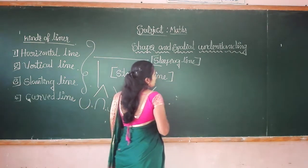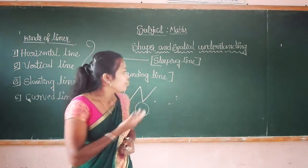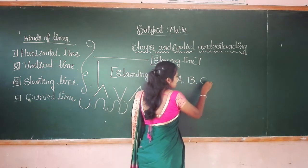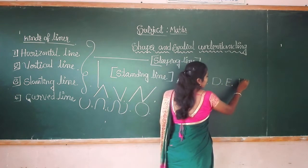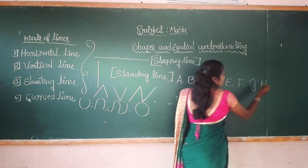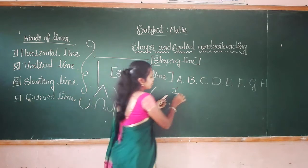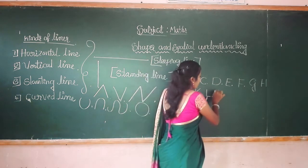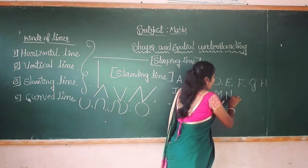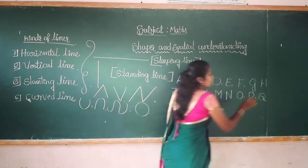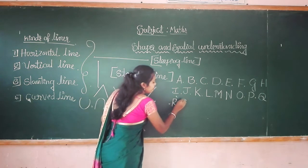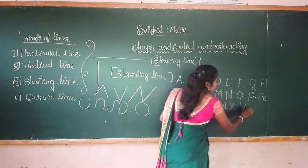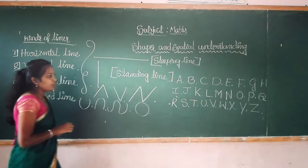There are 26 capital letters in English — already you know very well. Now let's write them: A, B, C, D, E, F, G, H, I, J, K, L, M, N, O, P, Q, R, S, T, U, V, W, X, Y, Z. Can you find out which letters have straight lines?